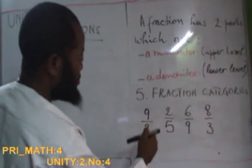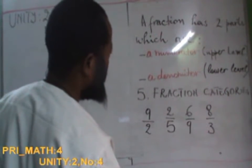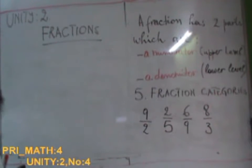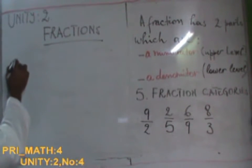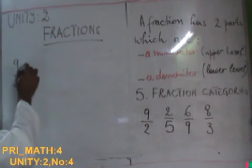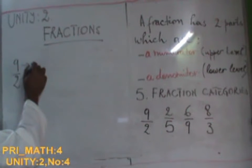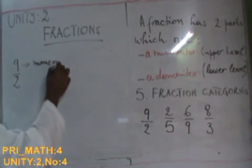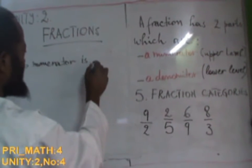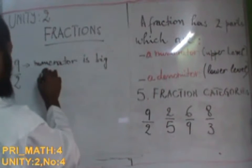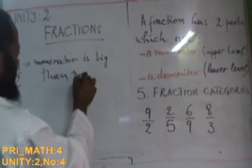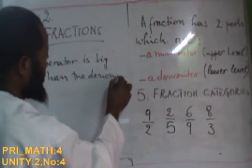Let us compare our denominator to our numerator. We begin with the first one, which is 9 over 2. We will say the numerator is bigger than the denominator.